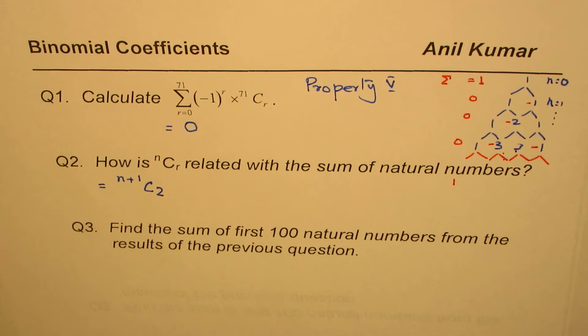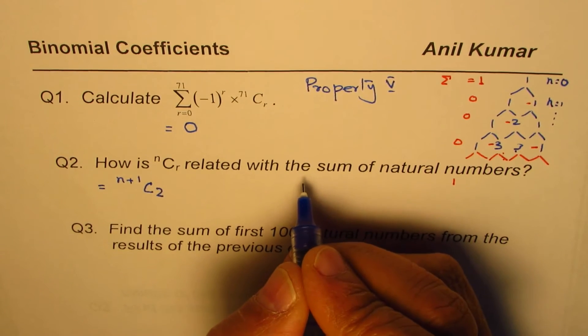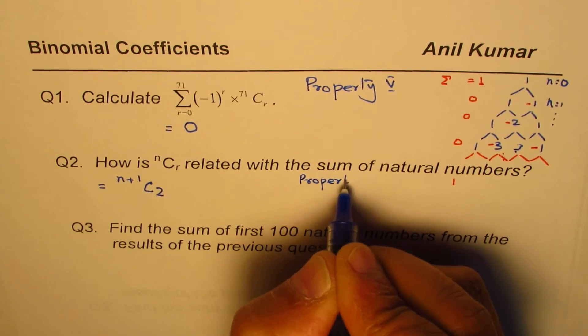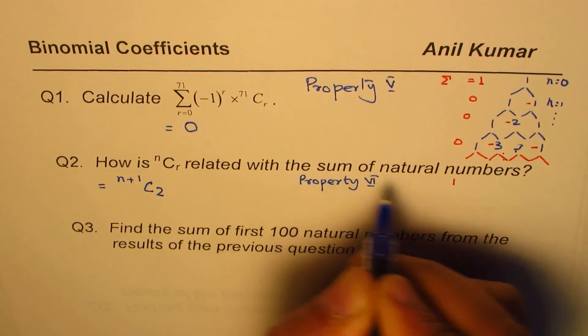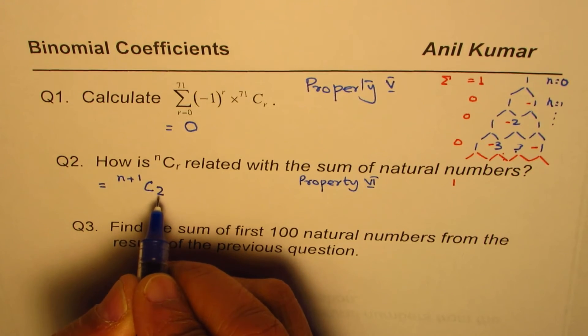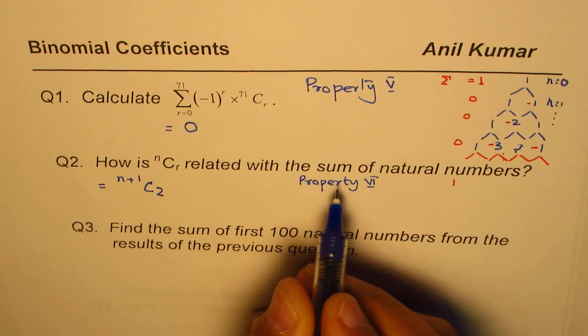So you can do this exercise, but we know this is also a property, and we call this as property 6. So the property 6 says that the sum of natural numbers is n plus 1C2. So that is what the property is, and question number 3 is related with that property.